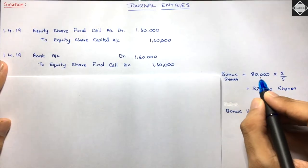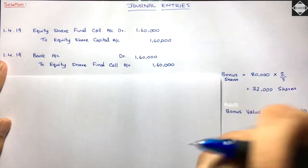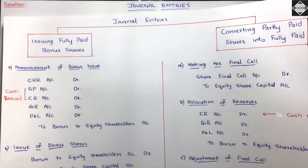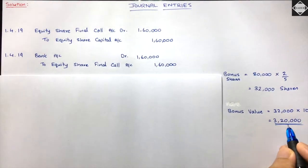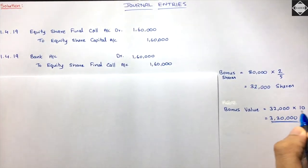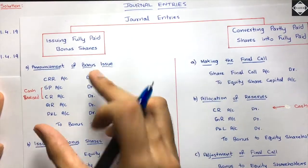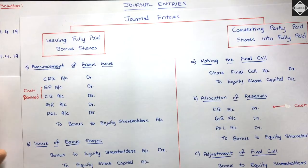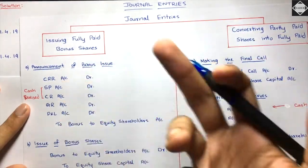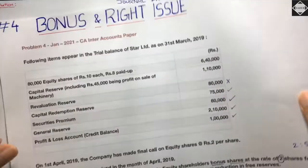For the bonus issue: existing shares 80,000 × 2/5 = 32,000 bonus shares. Bonus shares are always fully paid up, so value = 32,000 × ₹10 = ₹3,20,000. We need to source ₹3,20,000 from reserves. Available sources are CRR, Securities Premium, Capital Reserve (realized portion), General Reserve, and Profit & Loss. We follow the proper sequence.